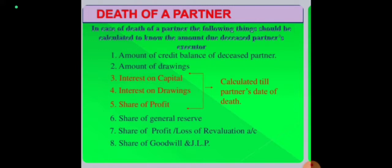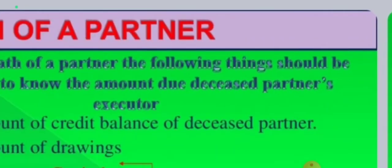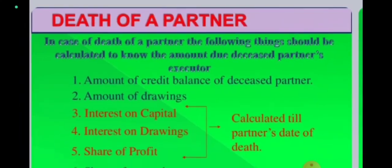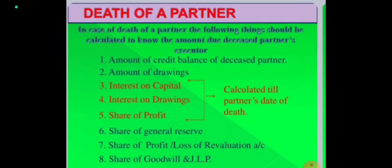In case of death of a partner, the following things should be calculated to know the amount due to the deceased partner's executor. The executor is the person who will be officially representing his claim on the firm. There are eight things which are to be given to the executor.